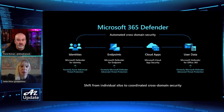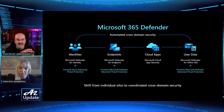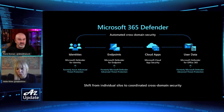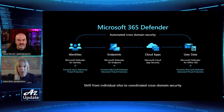Microsoft 365 Defender, formerly known as Microsoft Threat Protection, is our automated cross-domain security solution. If you look at the threat landscape today, we have many point solutions that help customers find things like phishing or suspicious user and endpoint activities. They generate more alerts and more signals, and customers are struggling to put all these pieces together. With Microsoft 365 Defender, we correlate events and alerts across multiple domains and bring them into a single coherent incident — a story that tells the customer exactly what happened.